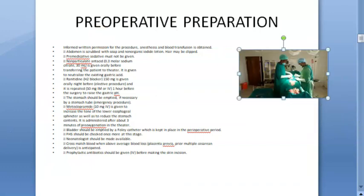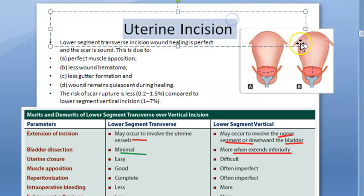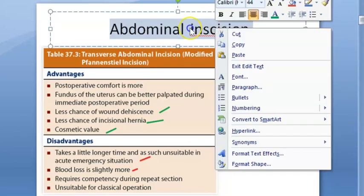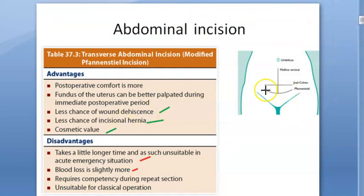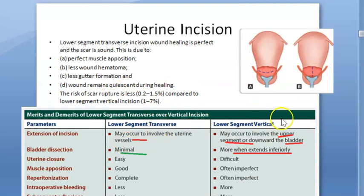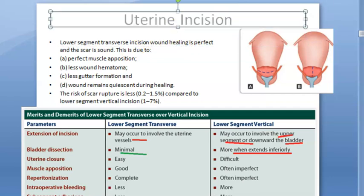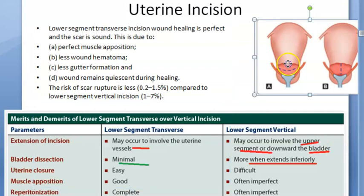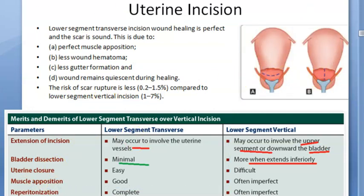Before moving to surgical preparation, there is more information about the incision on the uterus itself. What we discussed so far — the Pfannenstiel — are abdominal incisions. Once you make a transverse abdominal incision, you then have to decide how to cut the uterus. The uterine incision can be either transverse or vertical. So you are making two separate incisions: one on the abdomen and then one on the uterus. On the lower segment of the uterus, the preferred choice is again a transverse incision.